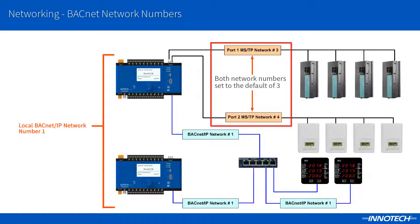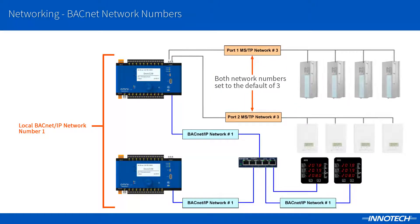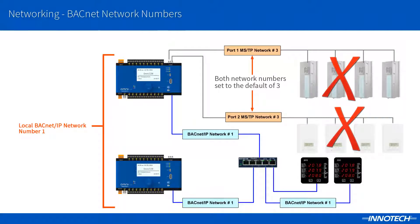If duplicate network numbers are used, this creates a conflict and the network segments will not be found and essentially are offline. Either of the port settings will need to be corrected by altering the port's network number to be unique. This will then allow the networks to function correctly.